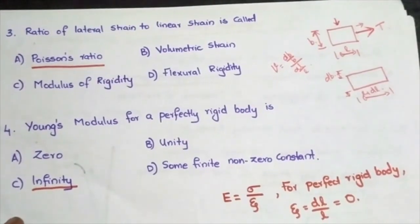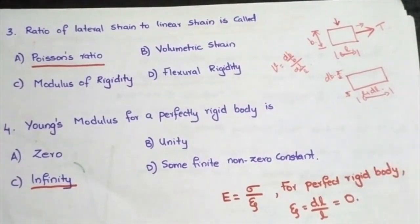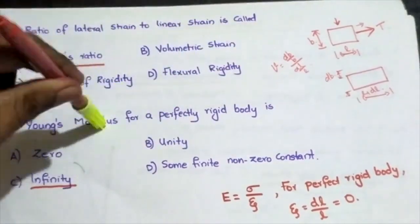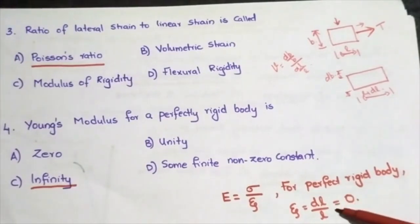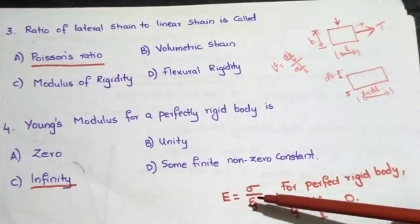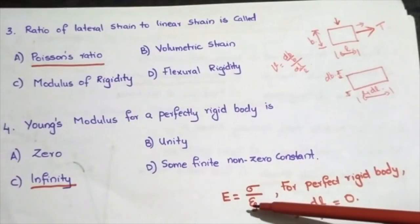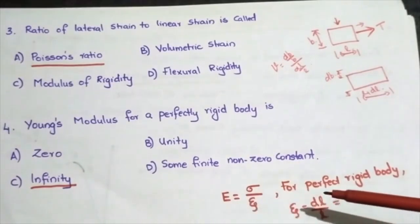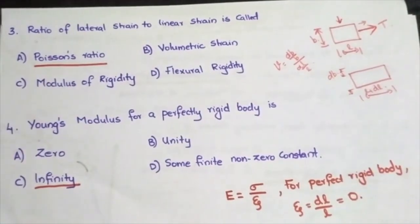Next question: Young's modulus for a perfectly rigid body is what? A perfectly rigid body does not undergo any deformation or elongation when a force is applied, so strain ε = δl/l = 0. From Hooke's Law, E = σ/ε, and since ε is zero, E equals infinity. Anything divided by zero is infinity, so the answer is infinity.